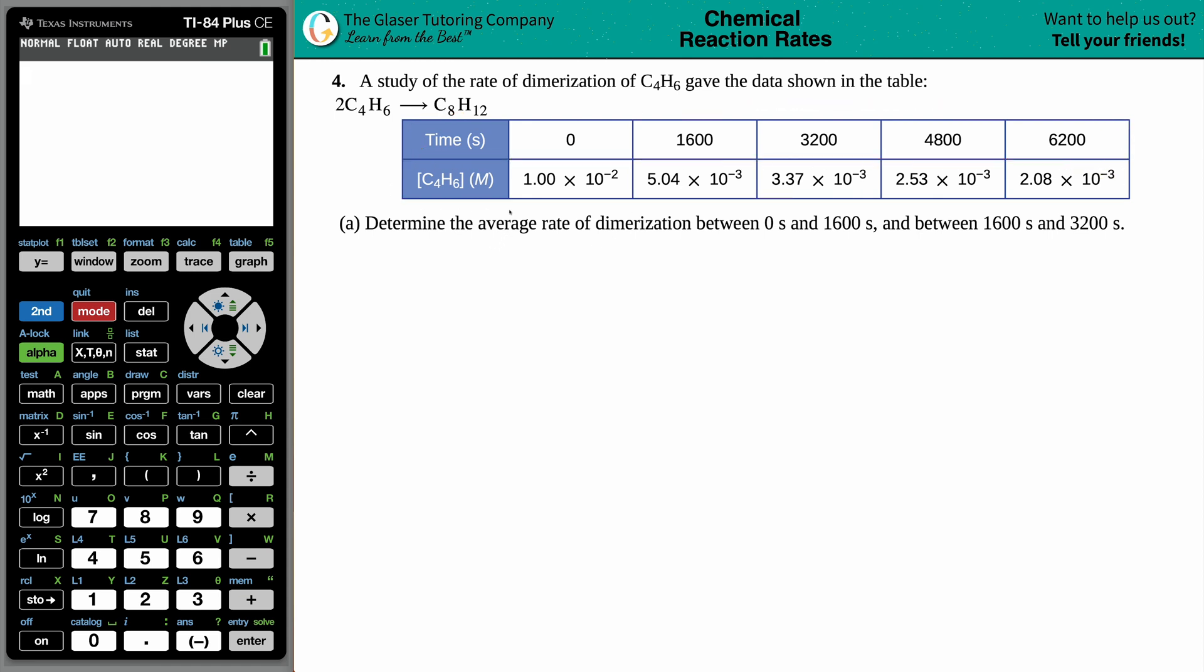Letter A, determine the average rate of dimerization between 0 seconds and 1,600 seconds, and between 1,600 seconds and 3,200 seconds. Okay, so we know that a rate is always going to be a change in concentration divided by the change in time.